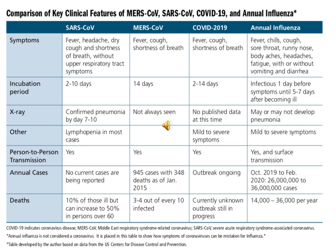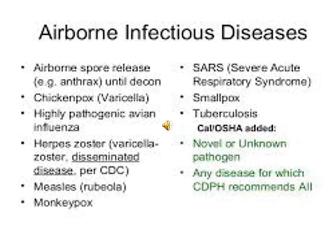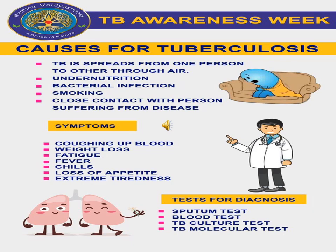Tuberculosis is another airborne infectious disease that is highly prevalent in Pakistan and India. It is caused by Mycobacterium tuberculosis. The disease primarily affects the lungs, causing pulmonary tuberculosis, but can also affect the intestines, meninges, bones, joints, skin, and other tissues. A patient with infectious pulmonary tuberculosis can infect 10 to 15 other persons in a year.